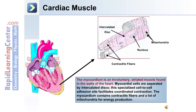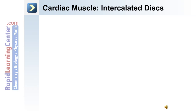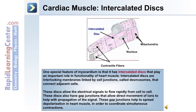Myocardial cells are separated by intercalated discs — specialized cell-to-cell adhesion sites that facilitate the coordinated contraction of the heart muscle. The myocardium contains contractile fibers and a large number of mitochondria for energy production. One special feature of the myocardium is the presence of these intercalated discs, which play an important role in the functionality of heart muscle.